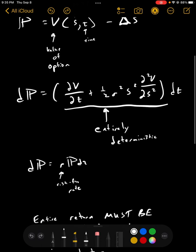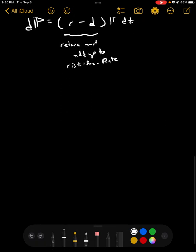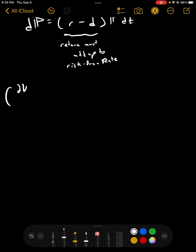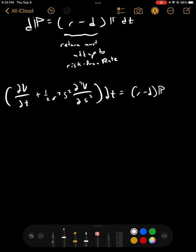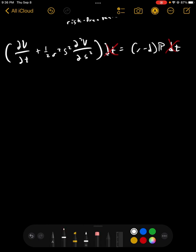So, we go and plug that back into this long guy. We're going to get the derivative of V with respect to t plus one-half sigma squared s squared second derivative of V with respect to s, close those parentheses dt is got to equal r minus d times our portfolio value dt. Now, before we move on, you can see there's a dt on both sides. And this isn't exactly how it works, but we're going to cross those out. We're going to say that those changes in time are equal, so they don't matter.